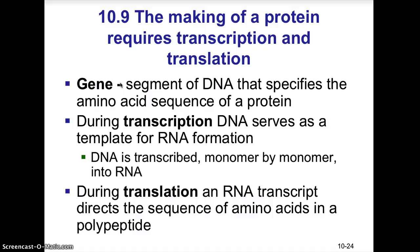A gene is a segment of DNA that specifies the amino acid sequence of a protein. The first step of protein synthesis is transcription, during which DNA serves as a template for RNA formation. DNA is transcribed monomer by monomer into messenger RNA, or mRNA. That messenger RNA is then sliced and capped before leaving the nucleus, and it enters the cytoplasm where it binds to a ribosome — a ribosomal subunit called rRNA — and the mRNA feeds into the rRNA.